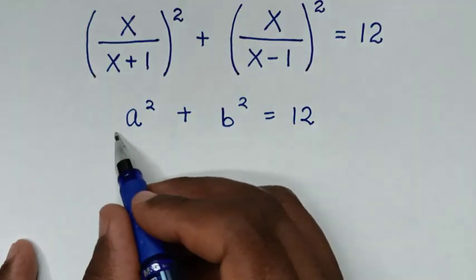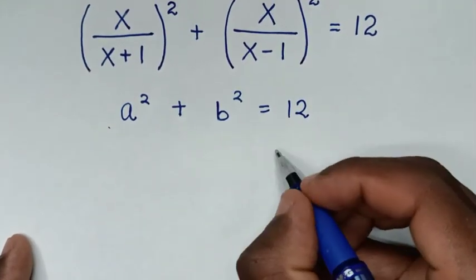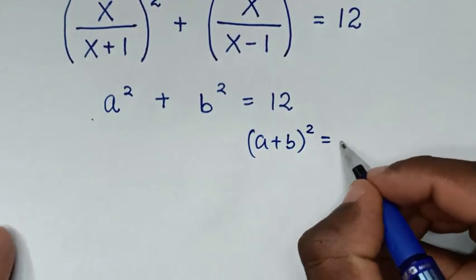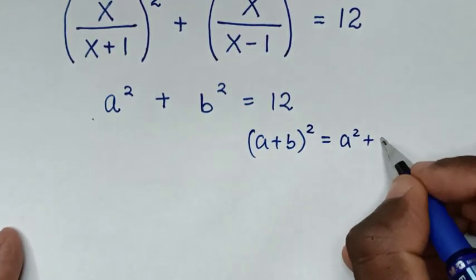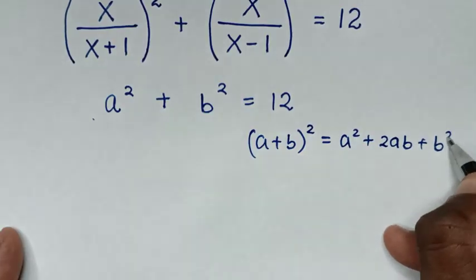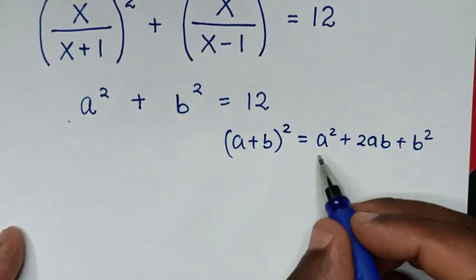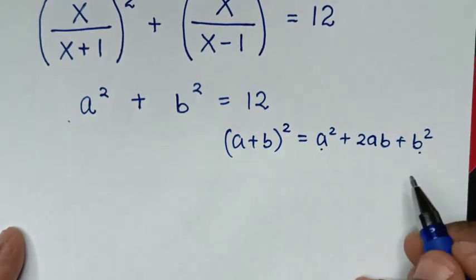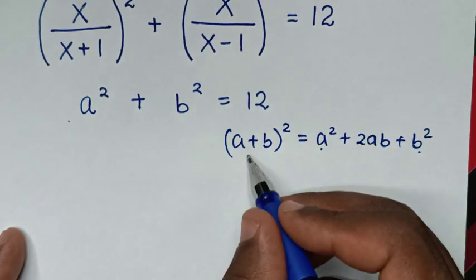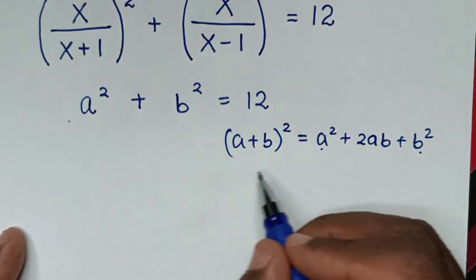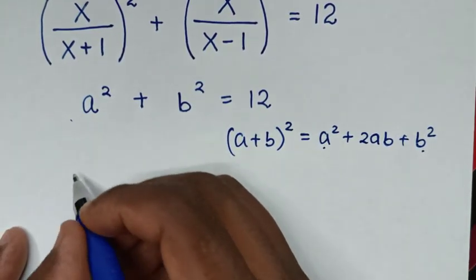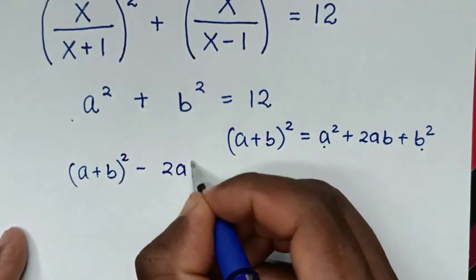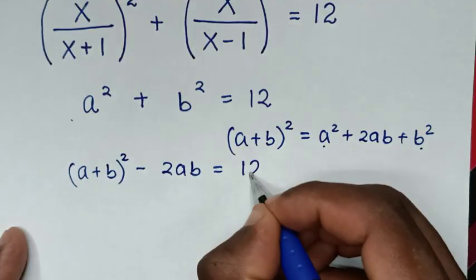In the next step, we apply the algebraic identity: (a+b)² = a² + 2ab + b². Since we have a² + b², we rearrange to get a² + b² = (a+b)² - 2ab. So we substitute: (a+b)² - 2ab = 12.